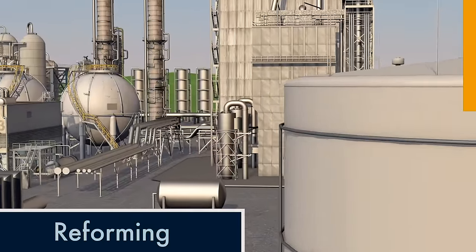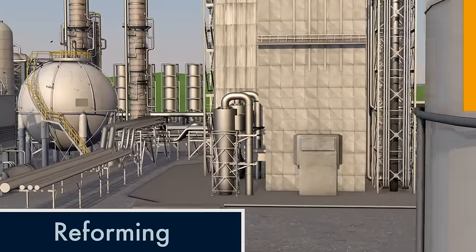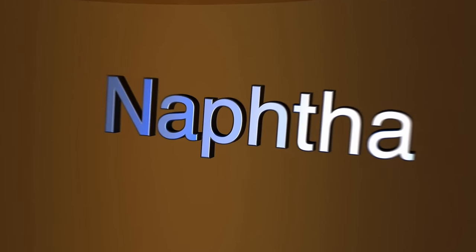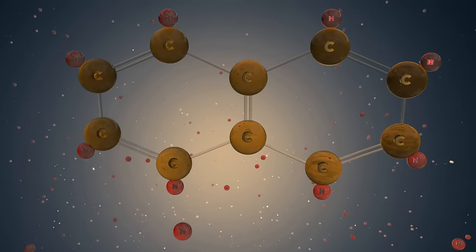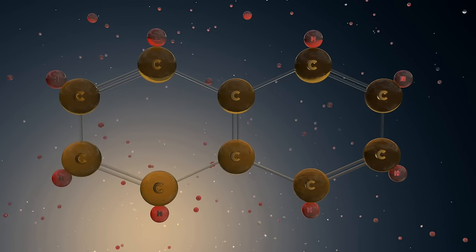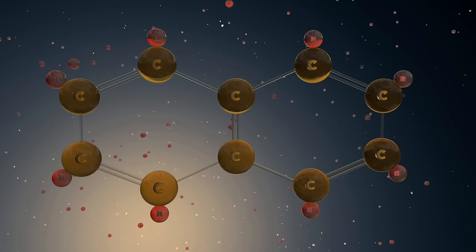Reforming is a process that increases the amount of gasoline produced from crude oil. One of the products separated in the distilling process is a liquid called naphtha. The number of carbon atoms in naphtha is about the same as the number found in gasoline, but their structure is more complex.